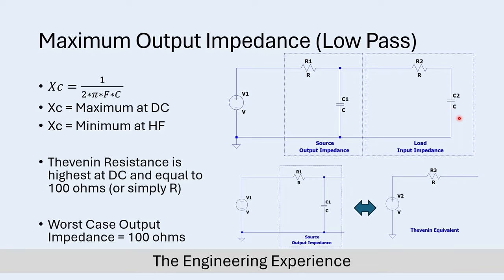We don't need to look at the whole circuit - we can focus on one part to solve the question. I've simplified the full circuit to just the resistive component and the capacitive component. Our output impedance of the source is defined by this point. The reactance of a capacitor - you can think of it as the resistance of a capacitor at a certain frequency - is given by XC equals 1 over 2 times pi times frequency times capacitance.